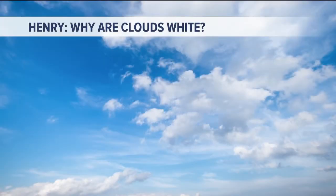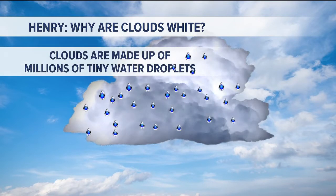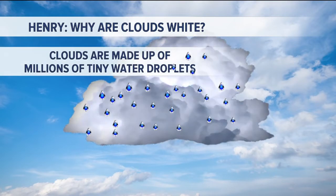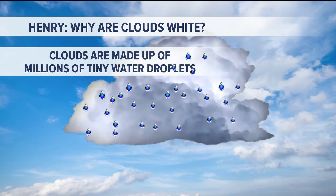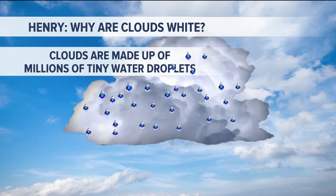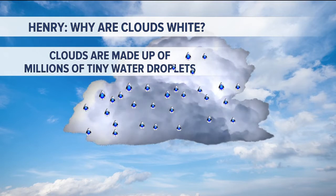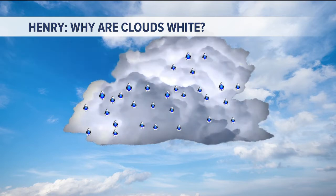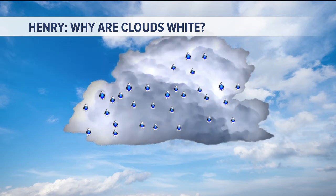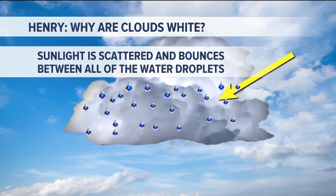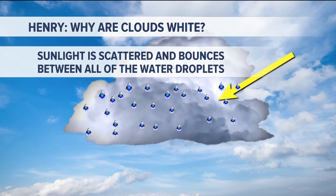Henry, thank you so much. Why are clouds white? That's Henry's question. Well, clouds are white because they are made up of millions of tiny, tiny little water droplets. And when sunlight hits a water droplet, it gets reflected and it bounces around.